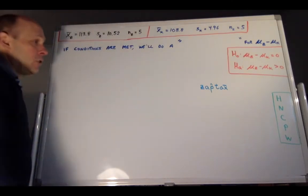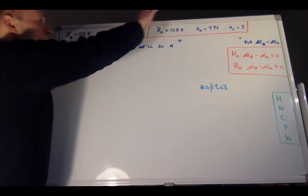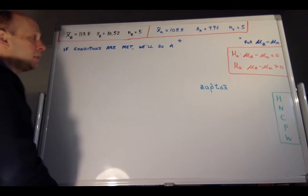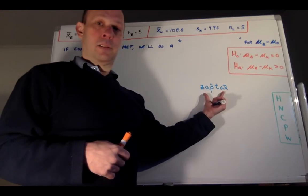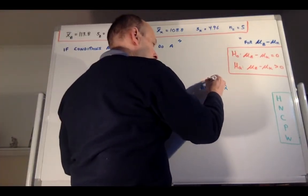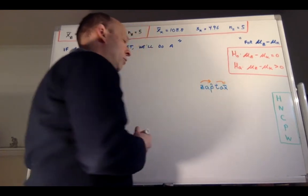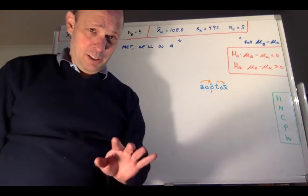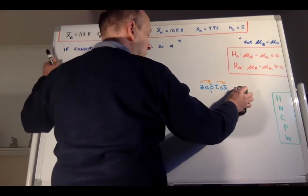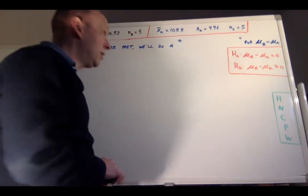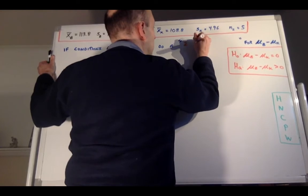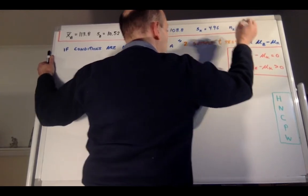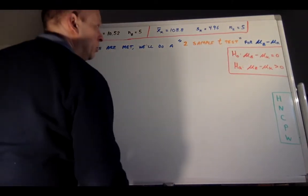We're up to naming the test. A useful mnemonic is 'zap-tax': proportions use Z, means use T. So this is not a Z test — we're working with means, so this is a two-sample T test. If conditions are met, we'll do a two-sample T test for mu_B minus mu_K.